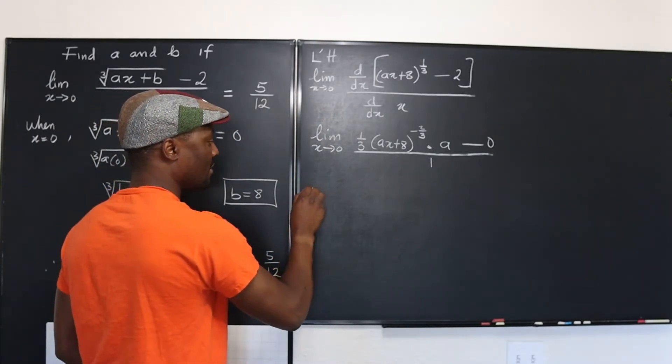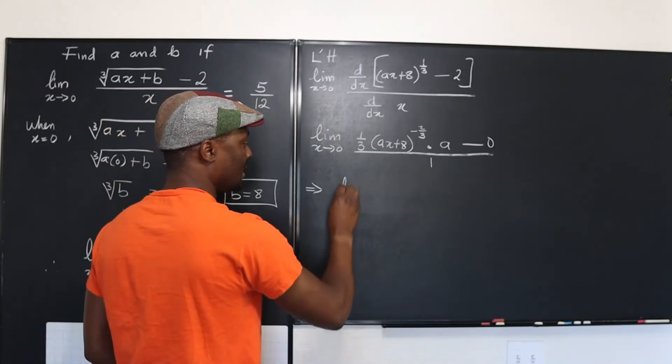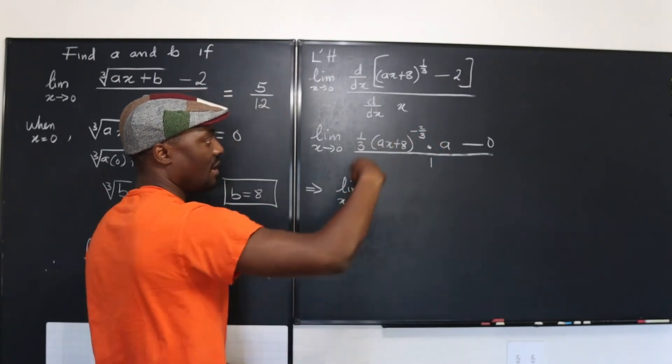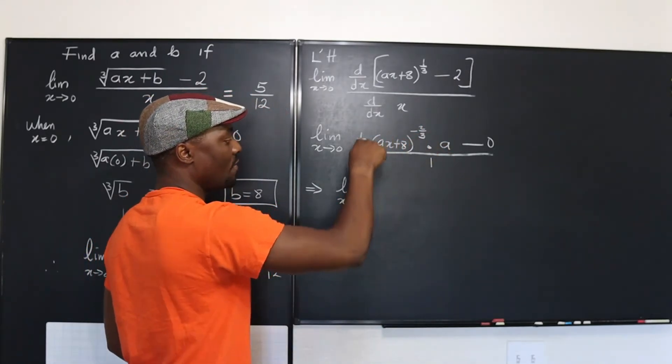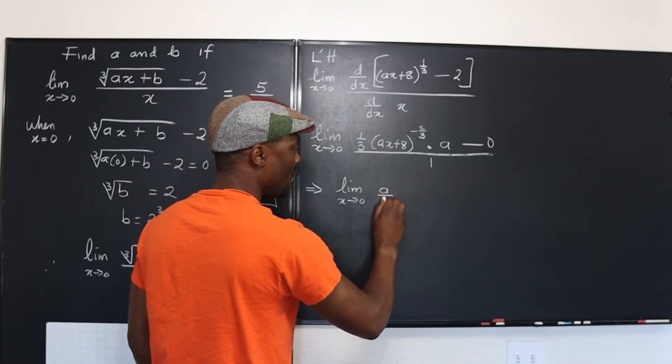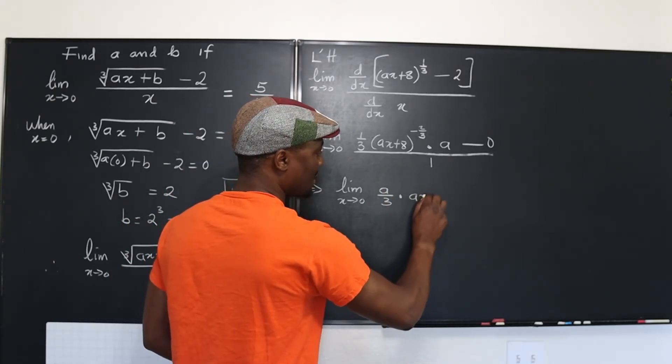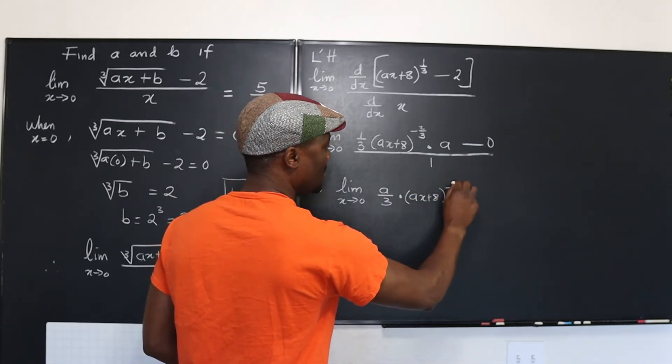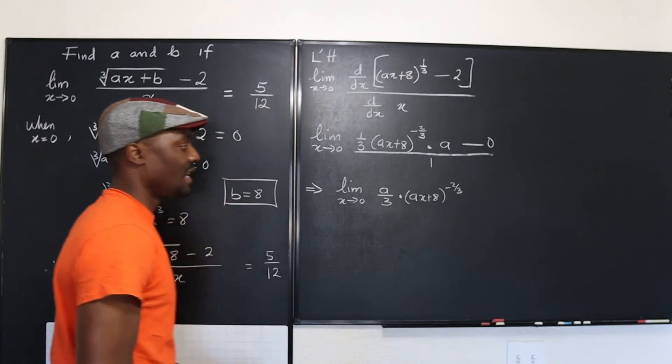Well, this tells us that it's the limit as x goes to zero. Well, let's clean this up. This is going to be A over three. So I'm going to say it's A over three. It's going to be A x plus eight raised to negative two thirds. No problem. That's what we've got.